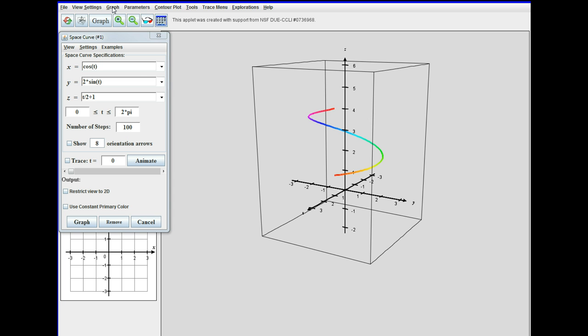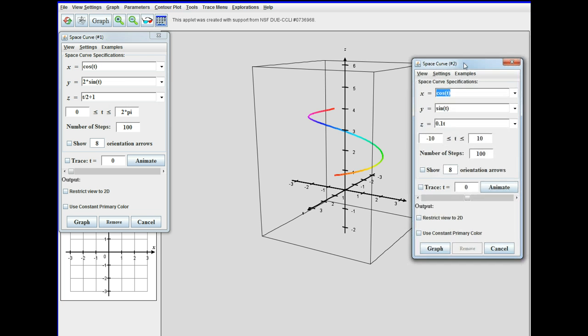Now the nice thing here is that the other applets don't really do multiple curves as far as I know. But this, you can add another space curve. So that's going to be three times t, t minus two, and two times sine of three t. That's going to be from zero to pi.